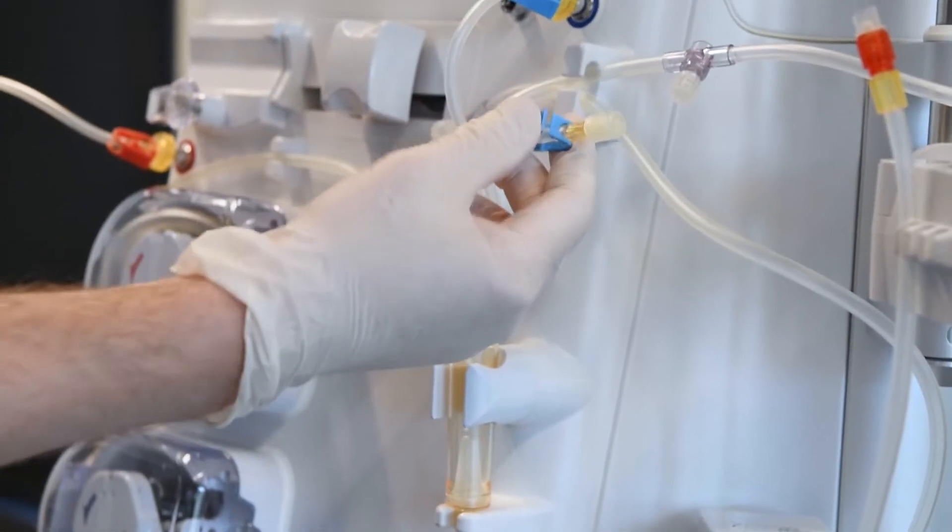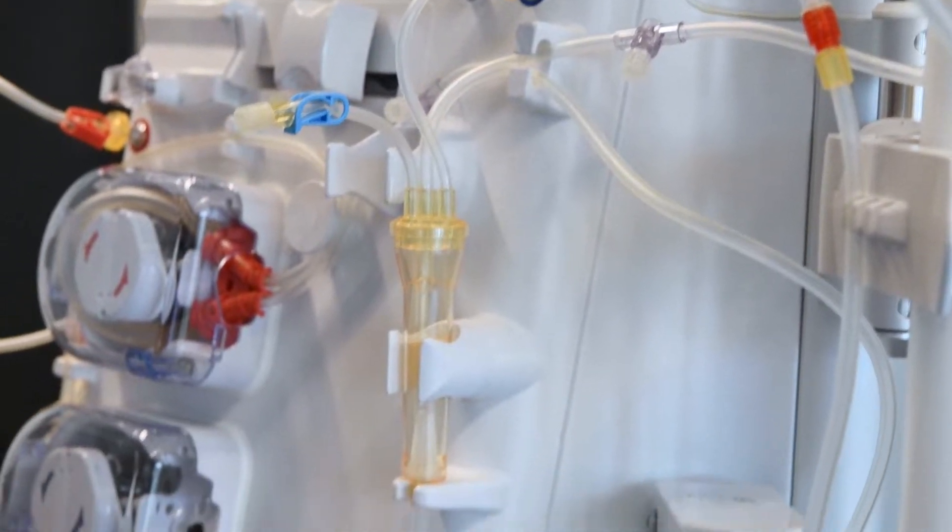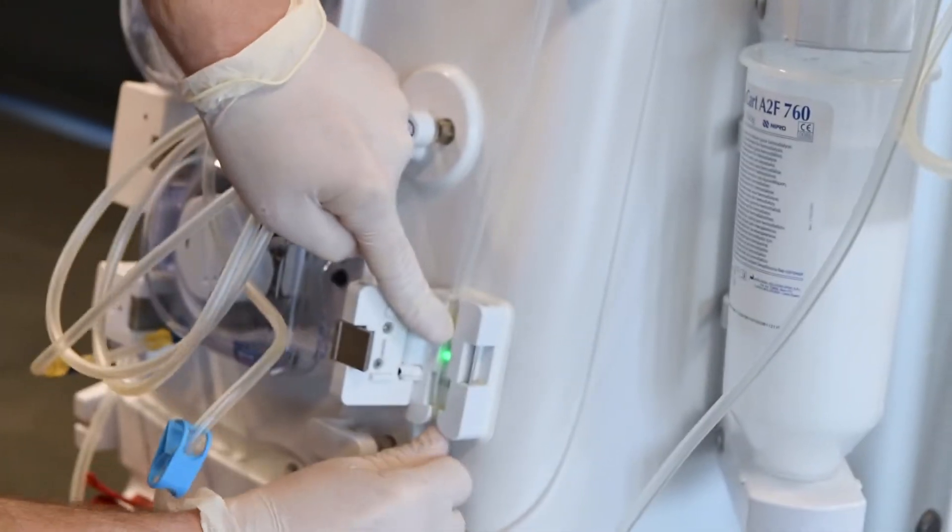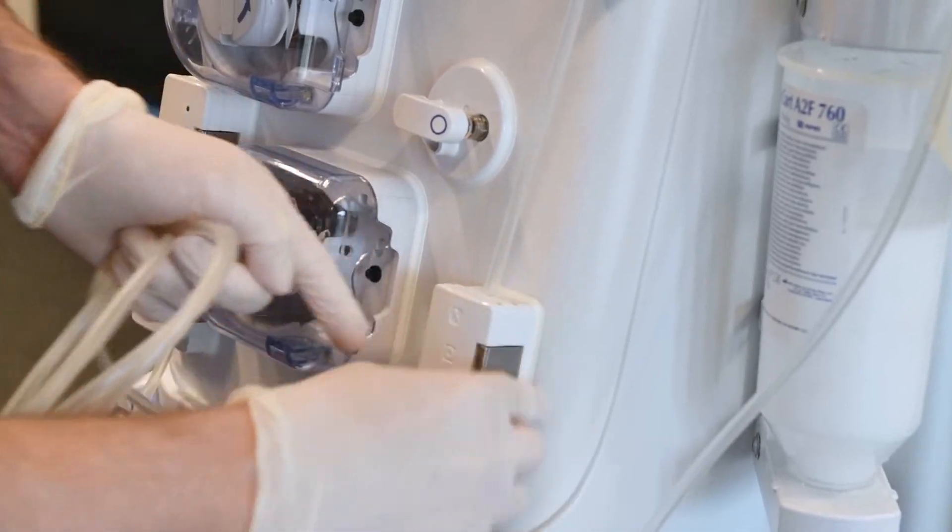Connect the venous pressure line. Place the line through the clamp box and close the door. Pull and turn the drain port cover and connect the venous line to the drain port.